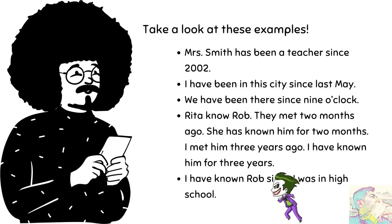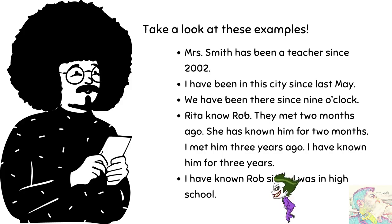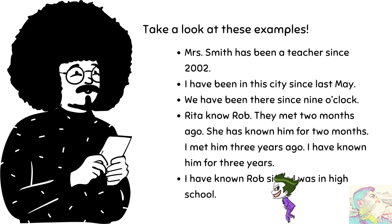Let's look at some examples. Mrs. Smith has been a teacher since 2002 — artinya Nyonya Smith telah menjadi seorang guru sejak tahun 2002, di satu titik di masa lampau, dan sampai sekarang dia masih menjadi guru. For the word 'for': She has known him for two months — dia sudah mengenalnya selama dua bulan, dari dua bulan yang lalu kenalan sampai sekarang, berarti dia sudah mengenal Bob selama dua bulan.